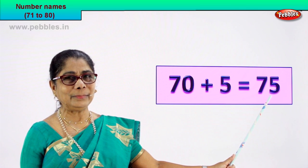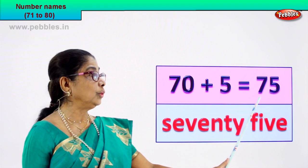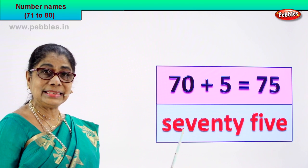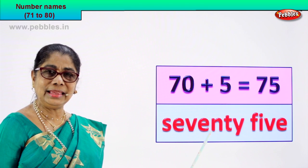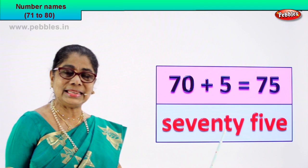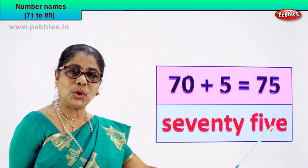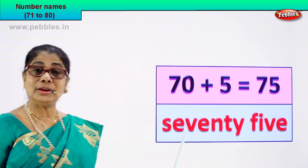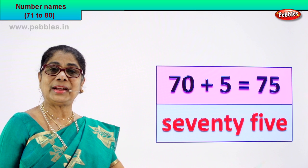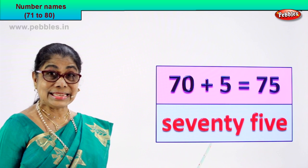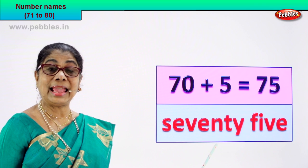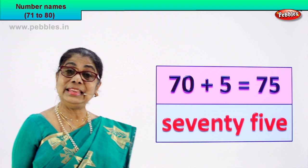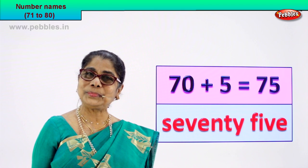How do we write its name? Very simple. You already know the spelling of 70, and you learnt to spell 5. Good. s-e-v-e-n-t-y — 70, then f-i-v-e. Numeral 75 and its name — you learn to write 75. Spell 70: s-e-v-e-n-t-y, 70, f-i-v-e. Good, shall we go to our next number.